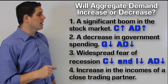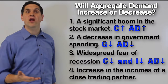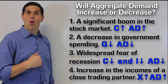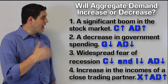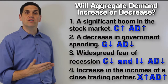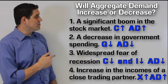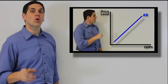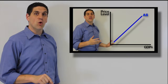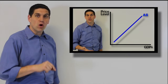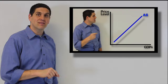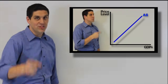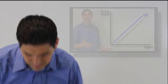An increase in the incomes of our closest trading partners means those people would buy more of our stuff, so our exports would increase, and our aggregate demand would shift to the right. Now make sure to watch the next video, which will explain the short-run and long-run aggregate supplies, and then you can put them both together. Until next time.